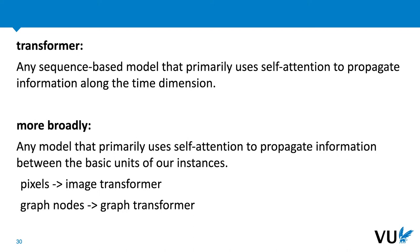We can add some other features and other types of layers, but the main layer responsible for propagating along the time dimension will be the self-attention. We'll limit ourselves to sequence models in this lecture, but actually there are now transformers in other domains as well. For instance, there are image transformers and graph transformers. The basic idea is that our input consists of a set of basic units — in the case of images,